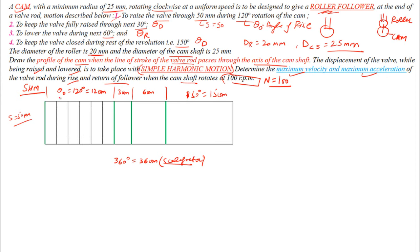Divide the angle of ascent (12 cm) into 6 equal parts — each division is 2 cm. Similarly, divide the angle of descent (6 cm) into 6 equal parts — each division is 1 cm. This is a simple harmonic motion problem, so we need to construct a semicircle.